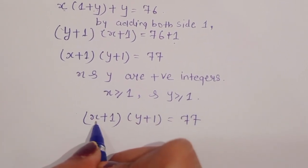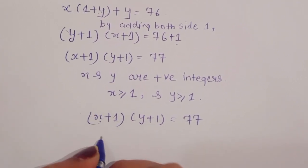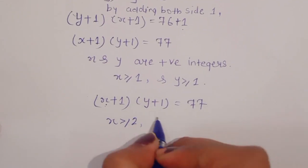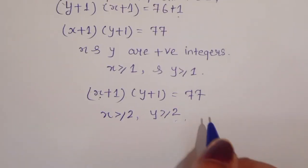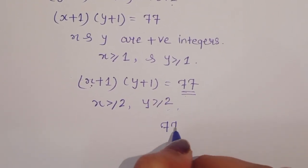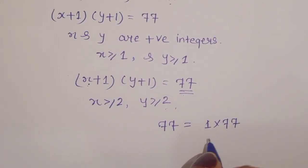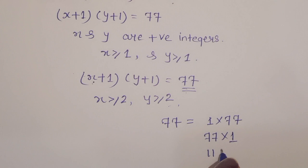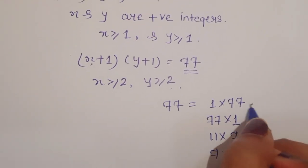Since x is at least 1, (x plus 1) is at least 2, and similarly (y plus 1) is at least 2. So we need factor pairs of 77 where both factors are at least 2. The factors of 77 are: 1 × 77, 77 × 1, 11 × 7, and 7 × 11.